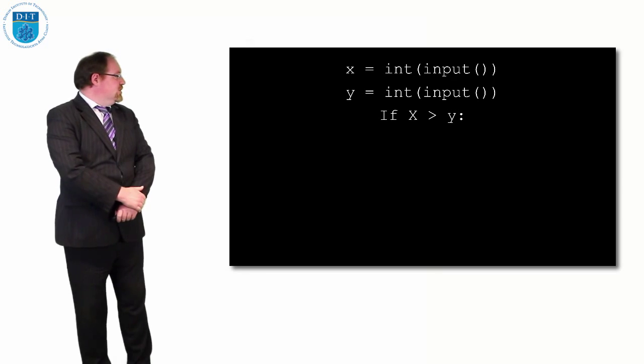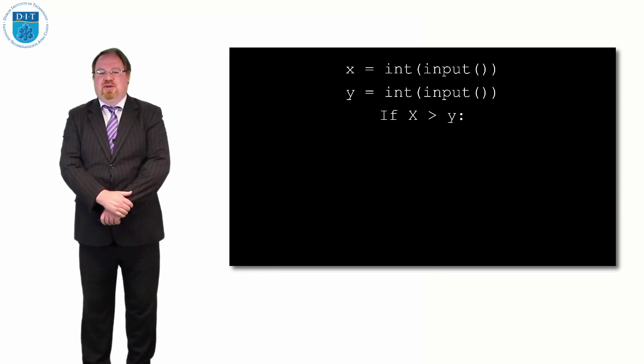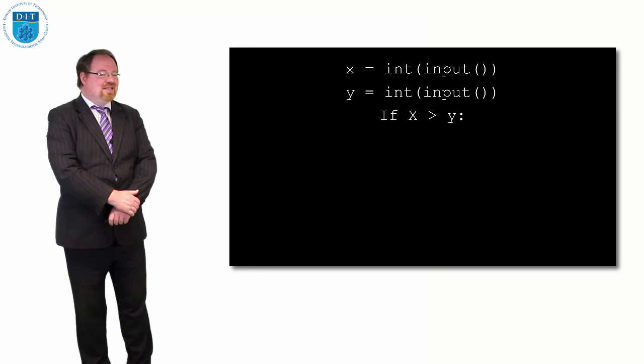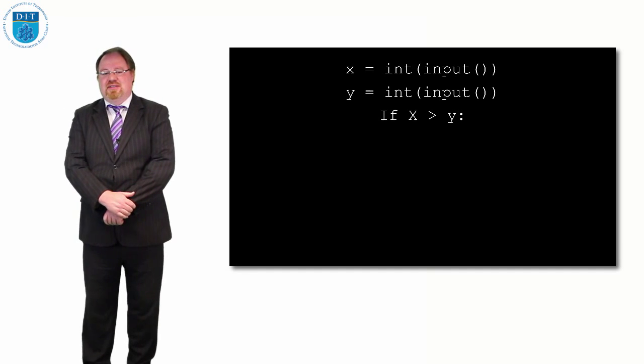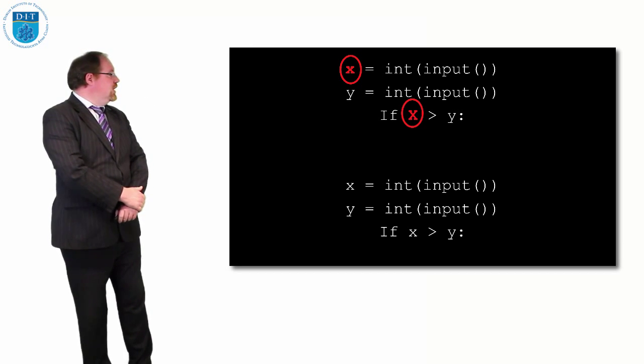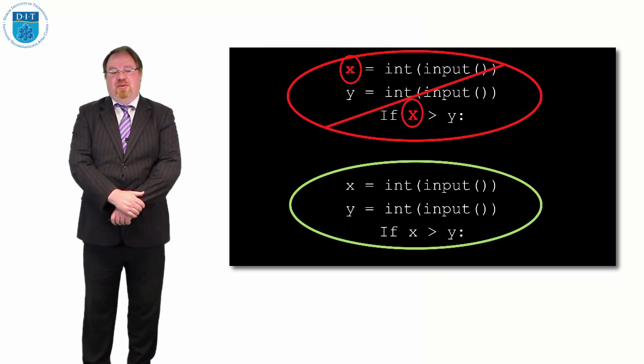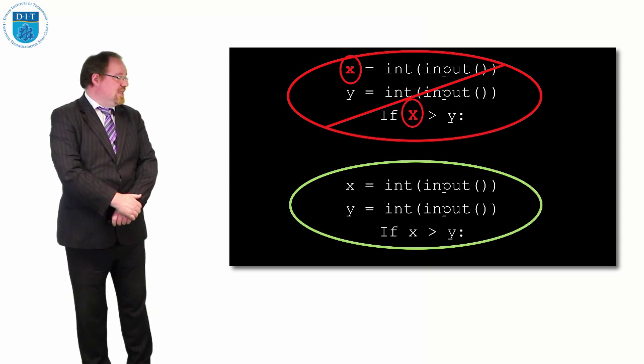Another one we have here: we're saying x gets the value of the input, then y gets the value of the input, and then we're checking if x is bigger than y. The x in this case is a small x when we're reading it in, and then it becomes a big x in the comparison. And again, that's no good. So we need to make sure if we declare a variable of type x lowercase, then every time we're using that x, it's lowercase x.